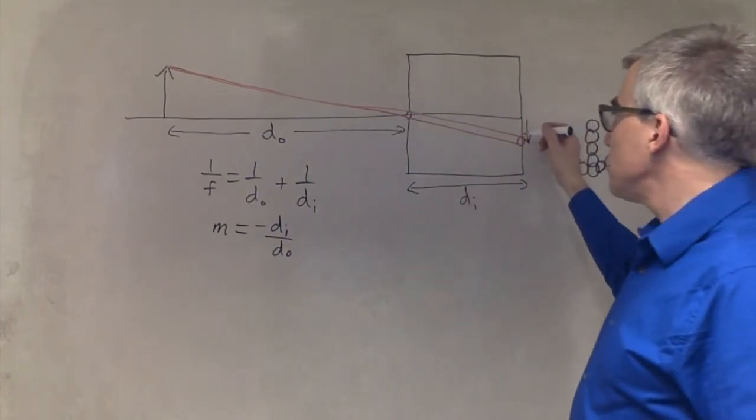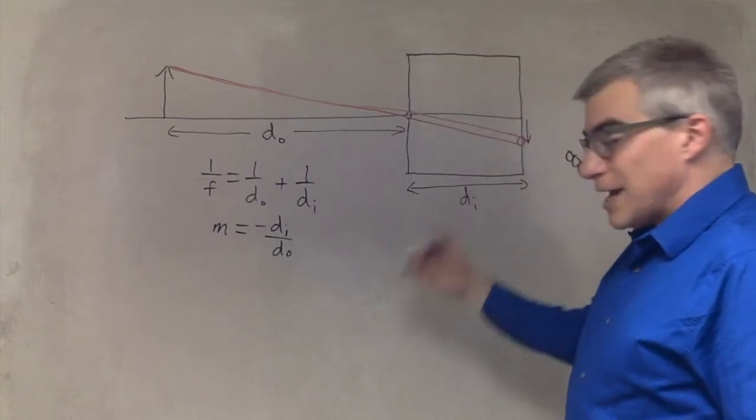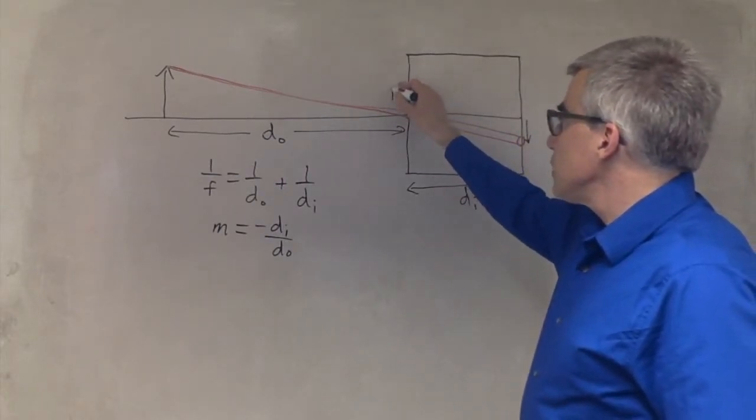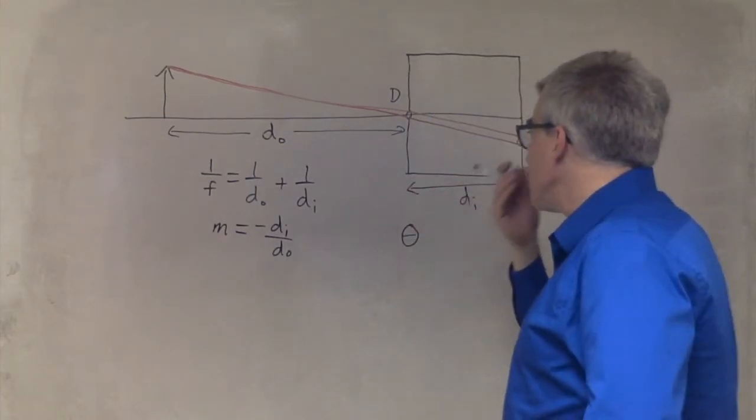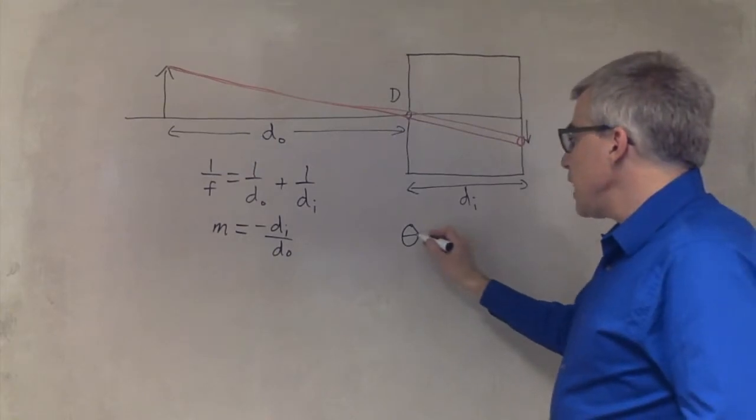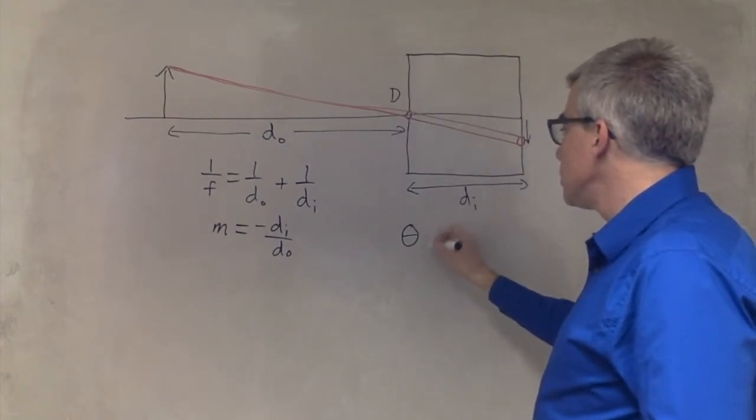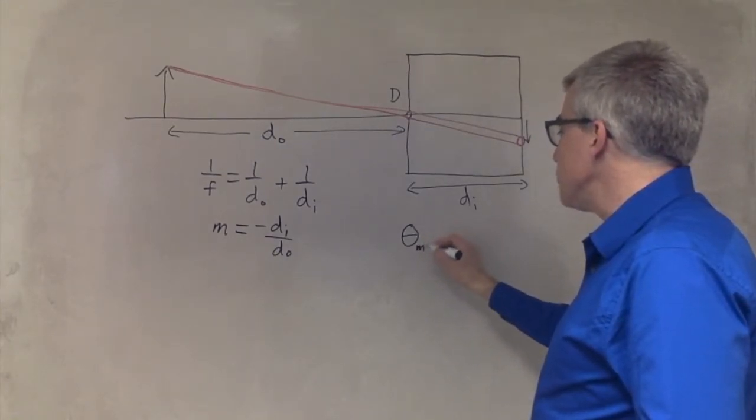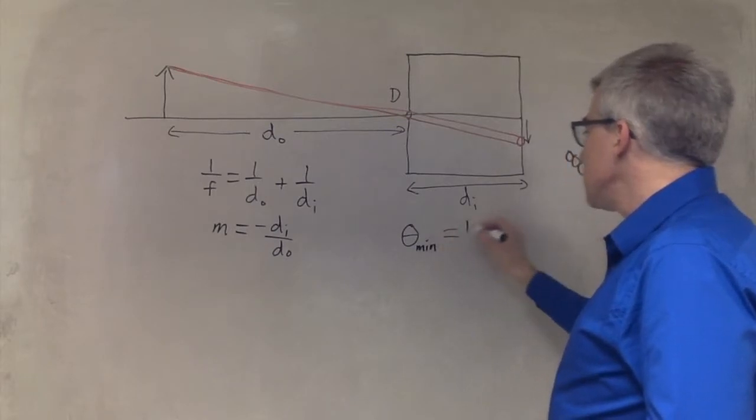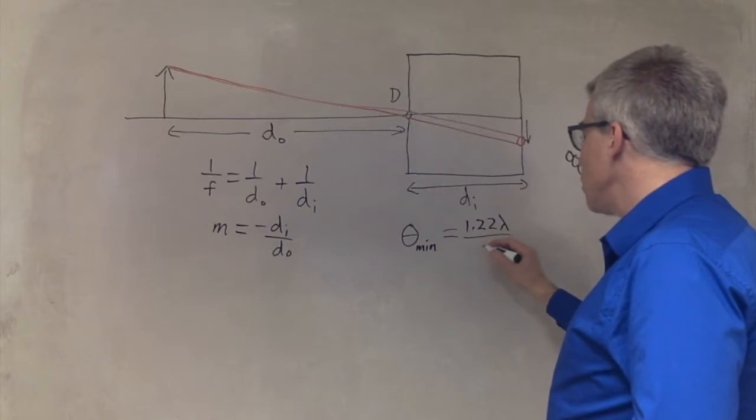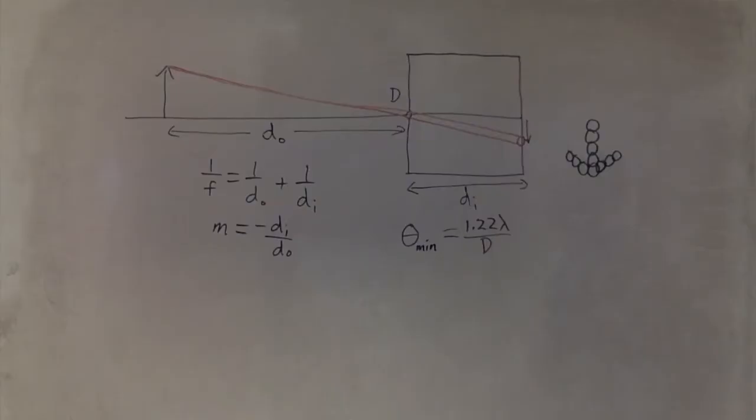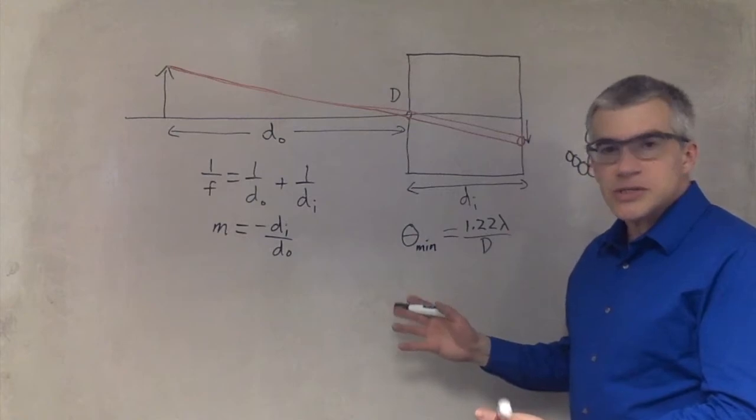Now, eventually, we're going to hit a point where diffraction plays a role. So if I say big D is the diameter of the opening, we get the angle for the diffraction, the sort of minimum angle you can see, is typically 1.22 lambda over D.